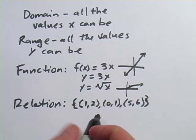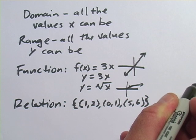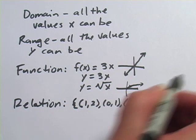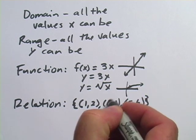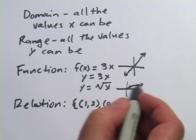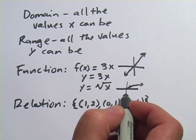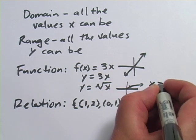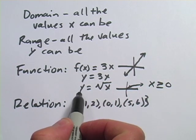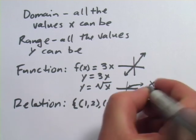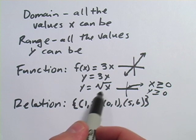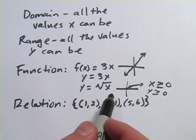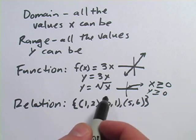The graph heads out to infinity in the x-direction, and although it gets very shallow, it keeps going up to infinity. But it doesn't do anything in the negative x or negative y direction. So for the domain we say x is greater than or equal to 0, and for the range we say y is greater than or equal to 0, because there's no way to get a negative number out of this function.